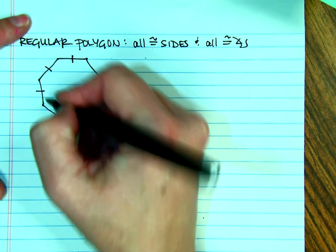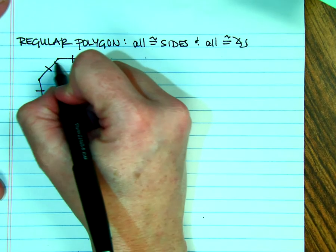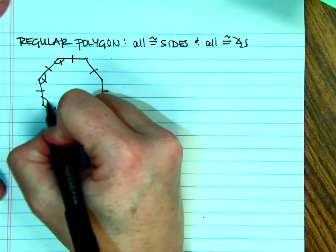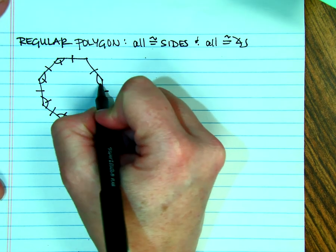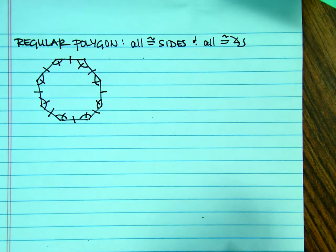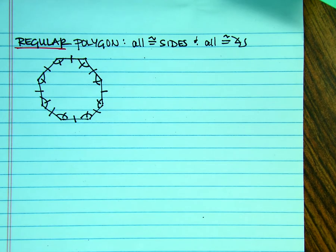So that means that all the sides are congruent. And then, of course, all the interior angles would also be congruent. So if it says regular, then that's what that means. All the sides are congruent, all the angles are congruent.